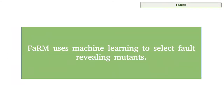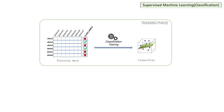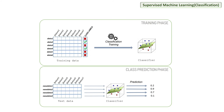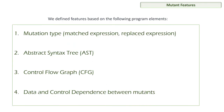Our approach is called FARM and uses supervised machine learning to select fault-revealing mutants. In supervised machine learning, you have features for each data element and a label. During training, you know the label and fit features into an algorithm to train a model. During evaluation, you have elements with only features, and through the model you predict the probability that an item belongs to the positive class. Based on a threshold, you decide whether the element is in the positive or negative class. In our approach, we use this to predict fault-revealing mutants.